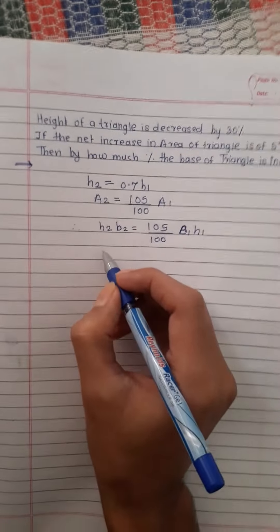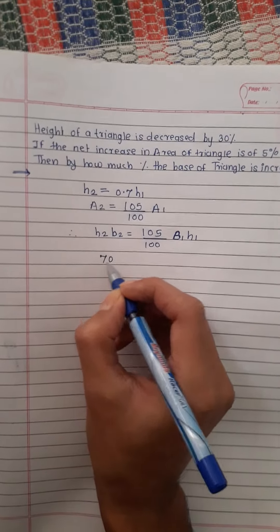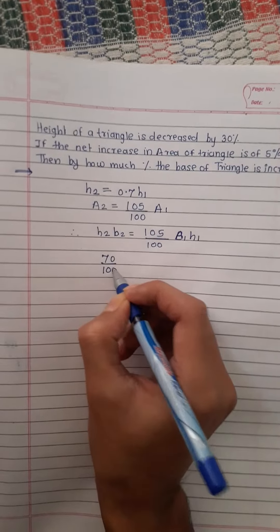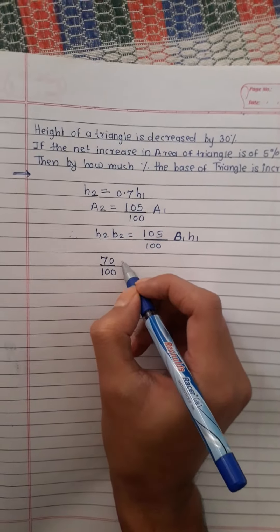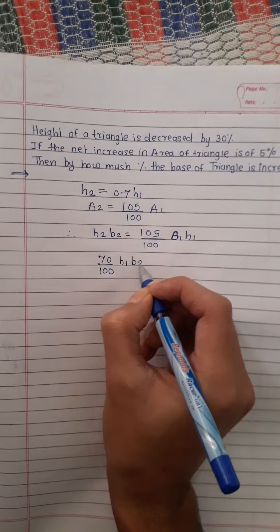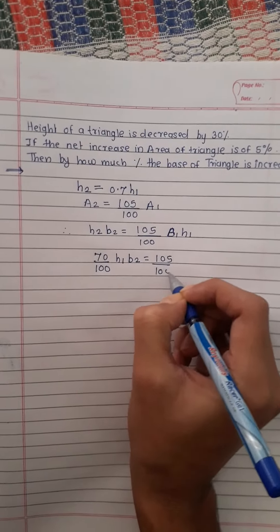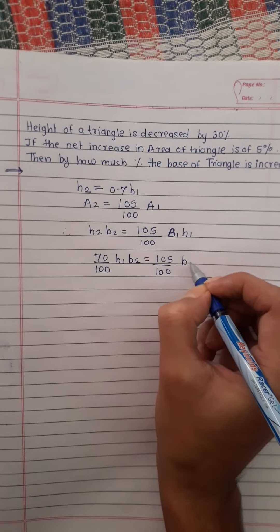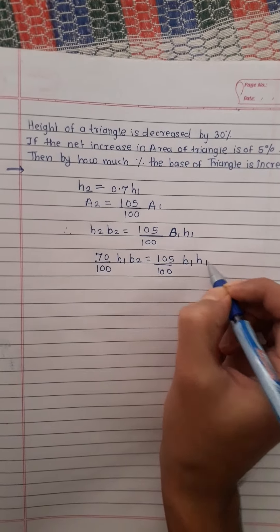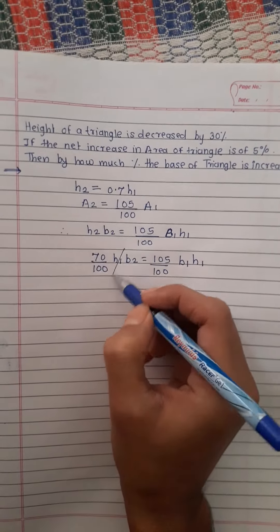h₂ is 70 upon 100 of h₁ into b₂ is equal to 105 over 100, b₁ h₁. Here h₁ h₁ get cancelled and red and red get cancelled.